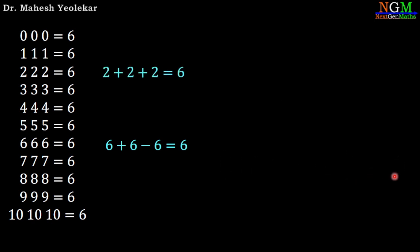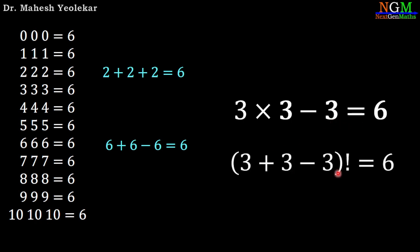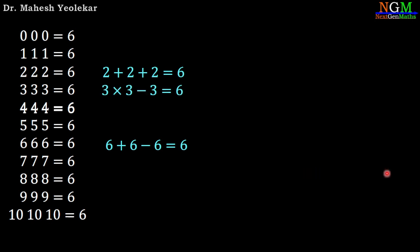Third equation: 3, 3, 3 equals 6. Apply multiplication and subtraction: 3 times 3 equals 9, minus 3 equals 6. Or 3 plus 3 minus 3 equals 3, and 3 factorial equals 6.